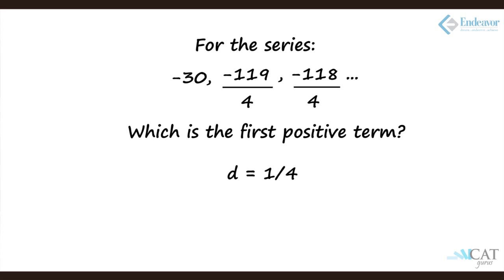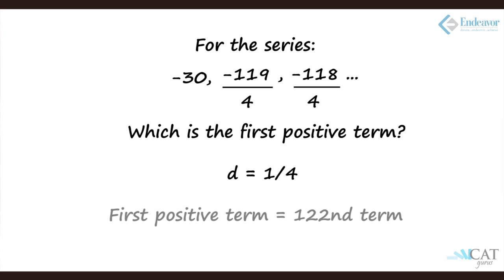Since the first term is minus 30 (i.e., minus 120/4), there will be at least 120 terms needed to reach 0. The 121st term will be 0, so the first positive term will be the 122nd term. Hence the answer is 122.